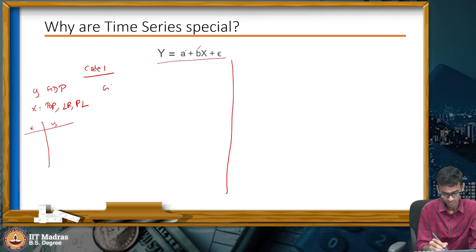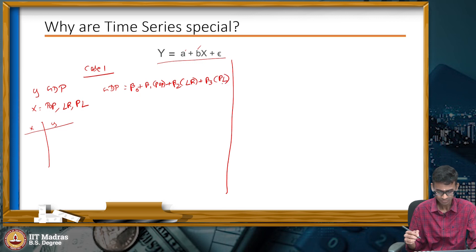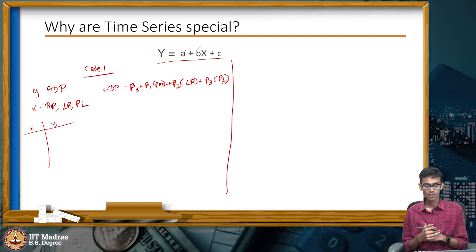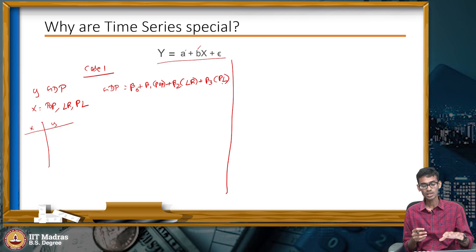The equation looks like: GDP = constant + β₁ × population + β₂ × literacy rate + β₃ × poverty level. Once you have this equation, for any given combination of population, literacy rate, and poverty level, you can predict the GDP of any country. This scenario follows all the assumptions of a linear regression model.